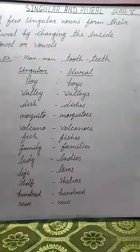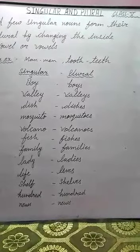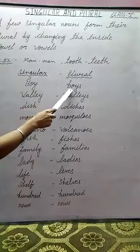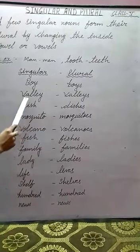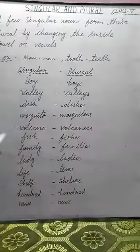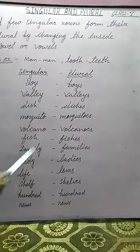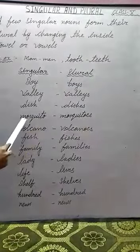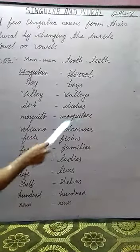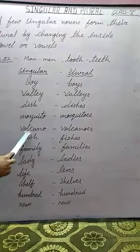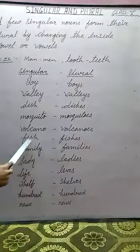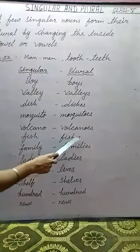Let us have a recap of some singular and plurals. Boy — the plural of 'boy' is 'boys.' Valley — the plural of 'valley' is 'valleys.' Dish — the plural of 'dish' is 'dishes.' Mosquito — the plural of 'mosquito' is 'mosquitoes.' The plural of 'volcano' is 'volcanoes.' Fish — the plural of 'fish' is 'fishes.'